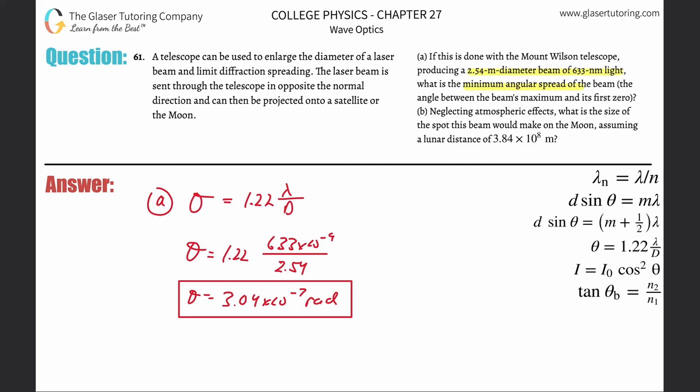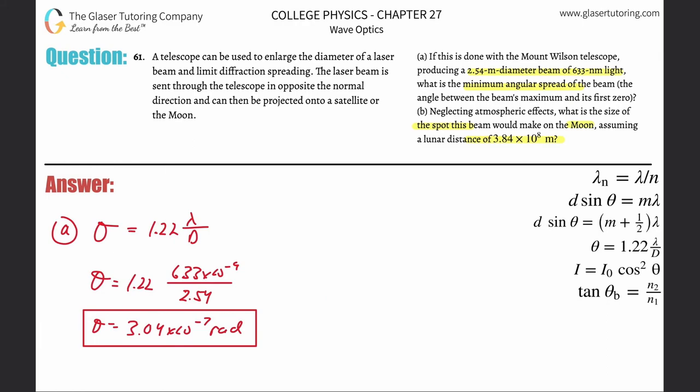Letter B says, neglecting atmospheric effects, what is the size of the spot this beam would make on the moon, assuming it has this particular distance? Let's move this on over and take a look at letter B. There is something different about this problem than the other ones, and that's because the diameter is not that small for the beam. So we have to take that diameter into account in this particular problem. So here's, let's say there's the beam, that's the start of the beam, and this is the lunar surface over there, and we know that this spreads in a certain angle, and by gosh, by golly, that's what we found just before, this angle. We found that.